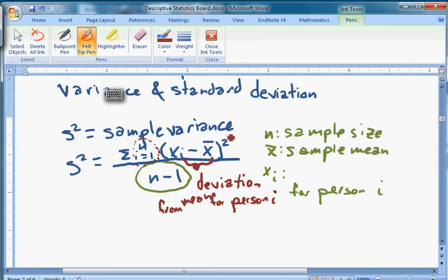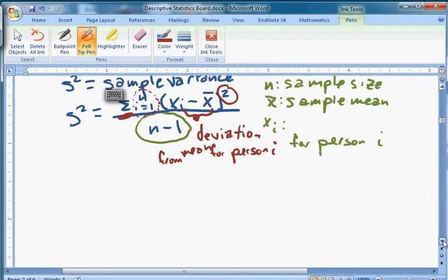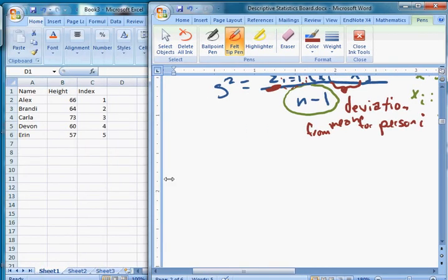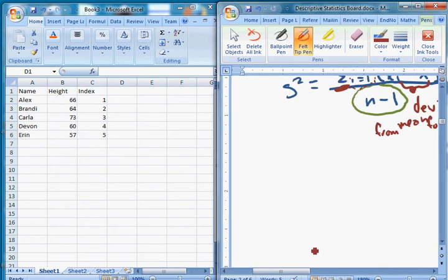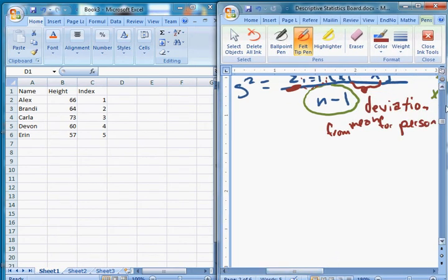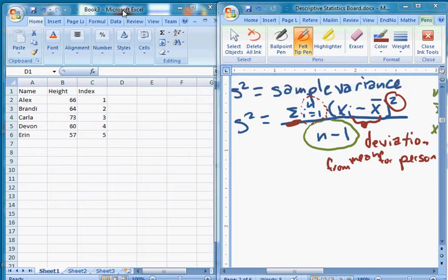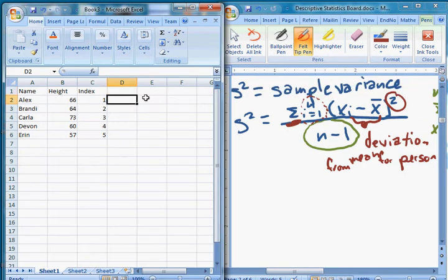We're going to take that deviation and we're going to square it. And then what we're going to do is we're going to add them all up. So we're going to add up those squared deviations and we're going to divide by n minus one. That'll give us our variance. So let's do it here. Let me pull this window in a little bit. This is what we had before. We calculated for this case we had Alex, Brandy, Carla, Devon, and Aaron. We're looking at their heights and we calculated that for this case x̄ is equal to 64.